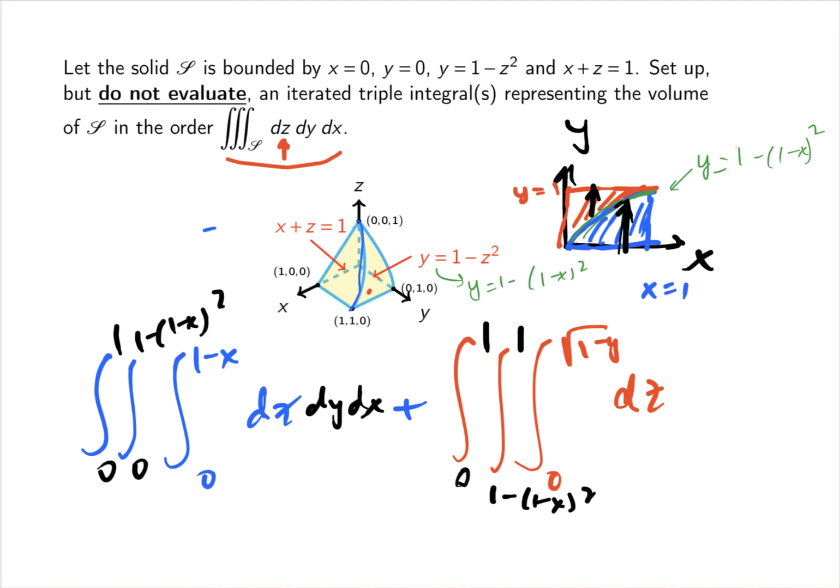So you basically set up two integrals: one on the region that the plane x plus z equals 1 is sitting on top of that region, and then another region which is topped by y equals 1 minus z squared.